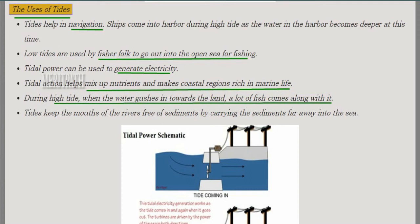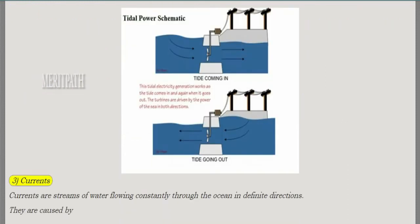The uses of tides include: tides help in navigation, as ships enter the harbor during high tide when water is deeper. Low tides are beneficial for fishing, as fishermen go into the open sea. Tidal power is used to generate electricity. Tidal action mixes nutrients, making coastal regions rich in marine life. During high tides, water comes onto the land and fishes also come along with it. Tides also keep the mouths of rivers free of sediments by carrying them far into the sea.